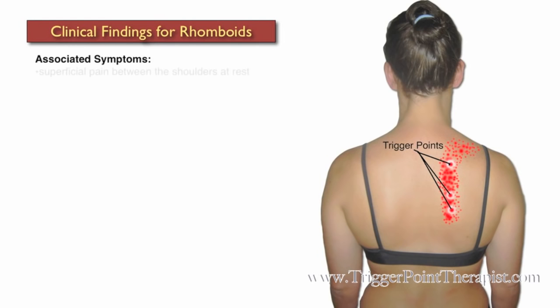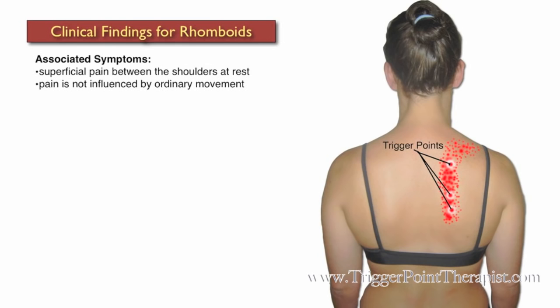Associated symptoms for trigger points in the rhomboid muscles include superficial pain between the shoulders, especially at rest. The pain is not influenced by any ordinary movement. Clients will also complain of a snapping or crunching noise during movement of the shoulder.